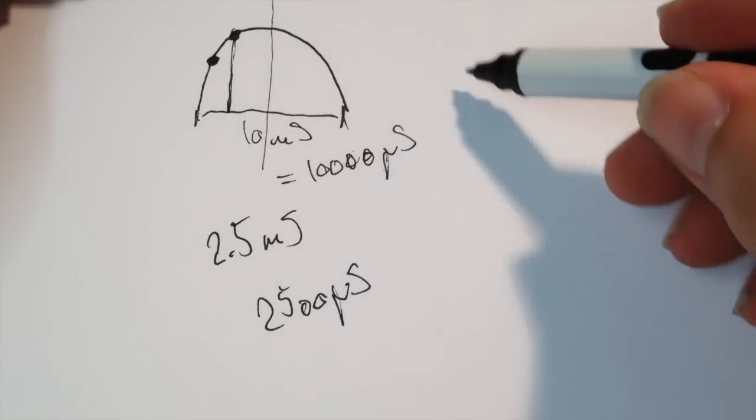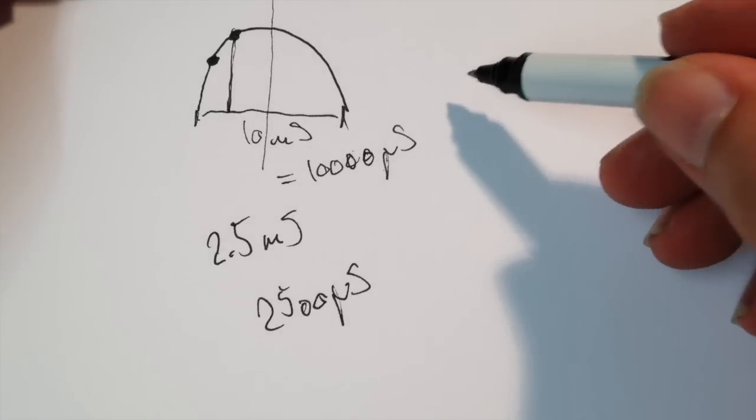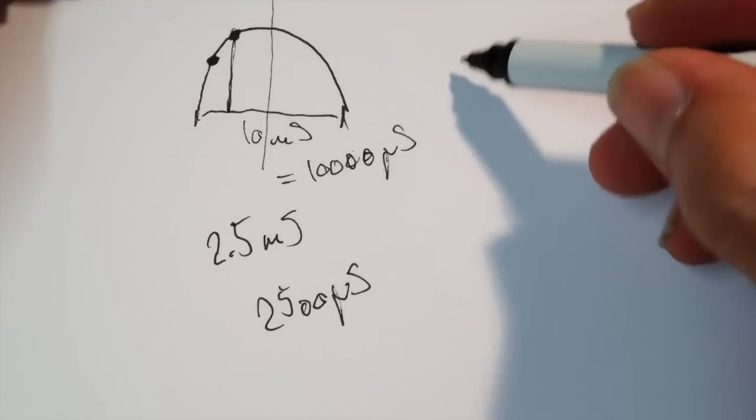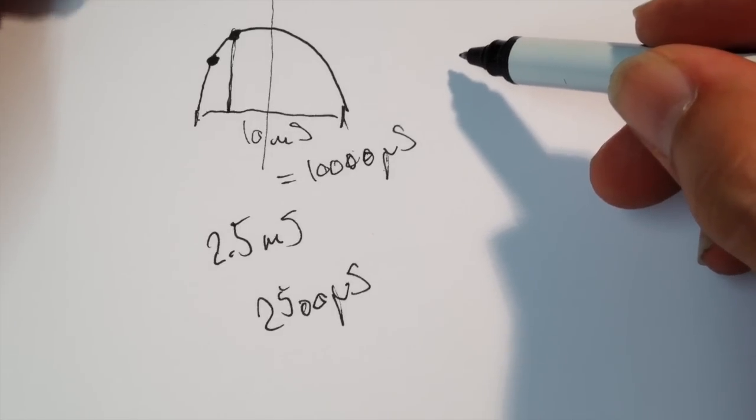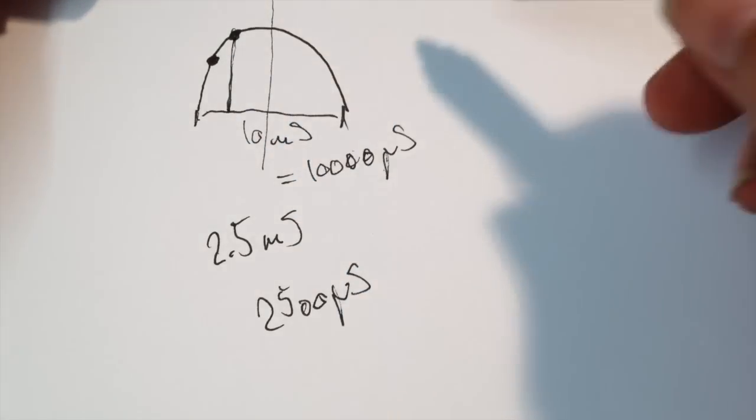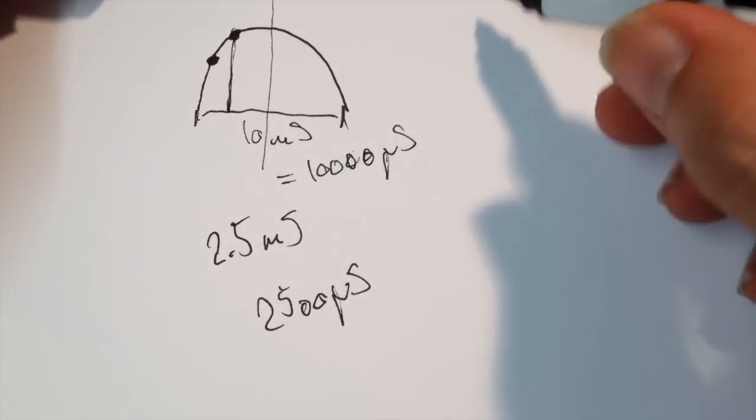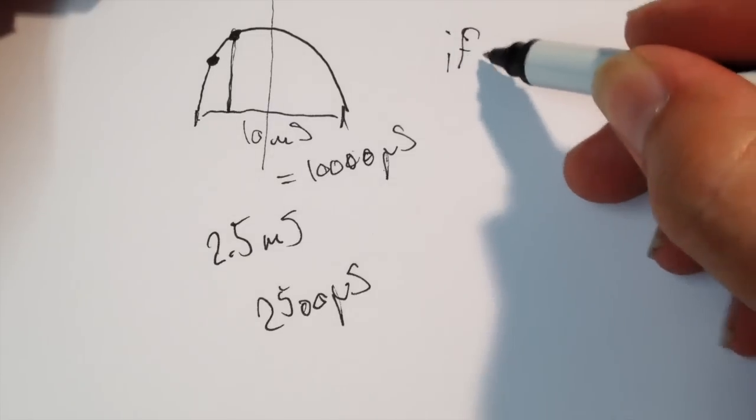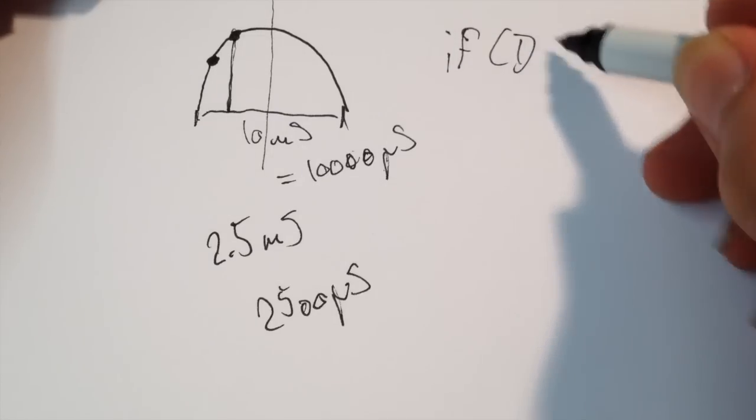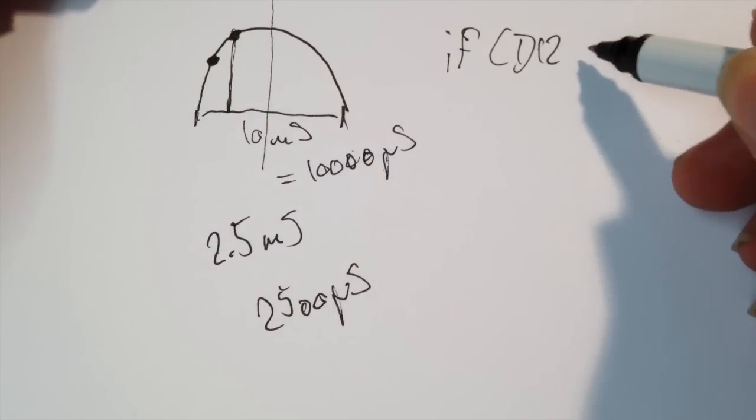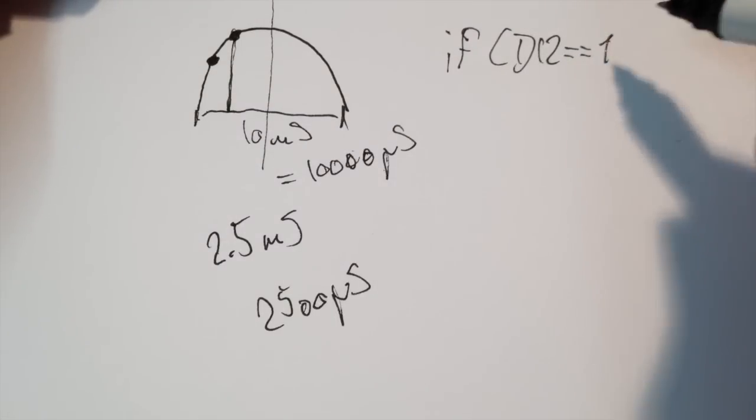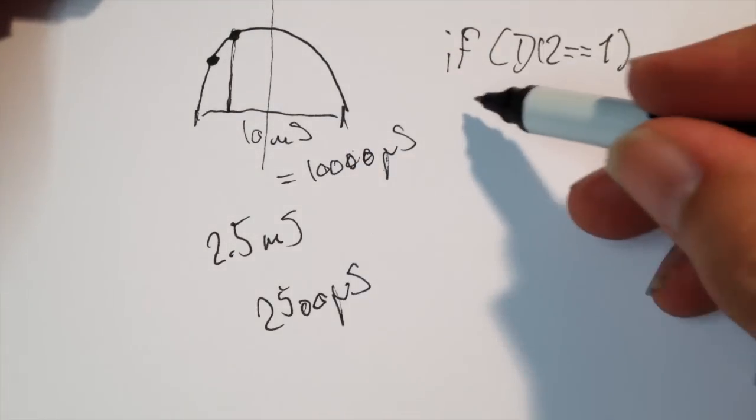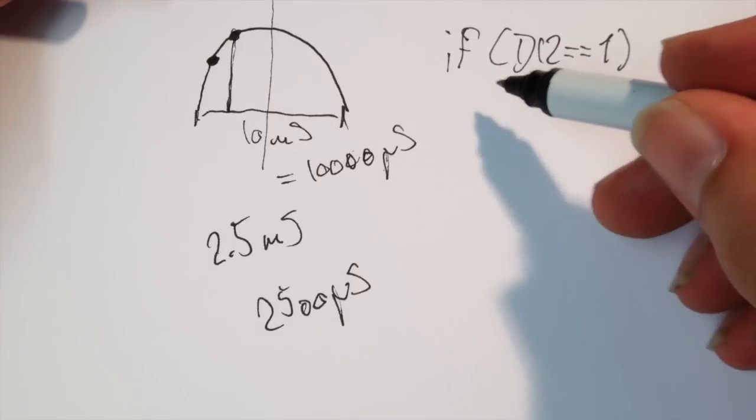So what the software will do, it will have a timer, which will go in a loop, and that loop will check for this thing. If this happens, if D12 is 1, then we're going to set the timer to 2,500.